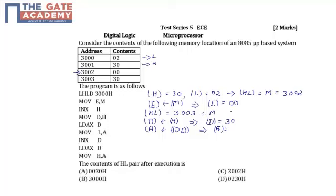D is 30, E is 00, so DE equals 3000. At address 3000, the content is 02, so A equals 02. Now we move this to L with MOV L,A. So contents of L become 02.